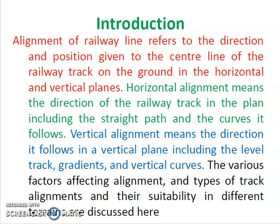Hi, this is Dr. Subhatra. In today's class, I am going to teach about the alignment of railway line. Alignment is fixing the center line of the railway track. We can define it as the direction and position given to the center line of railway track on the ground in the horizontal and vertical plane, which is called the alignment of a railway line.